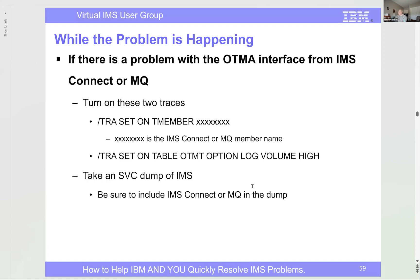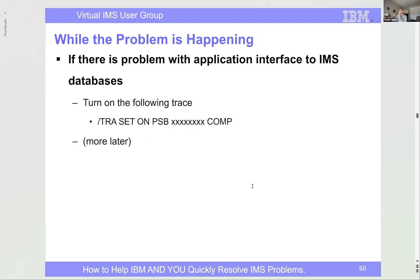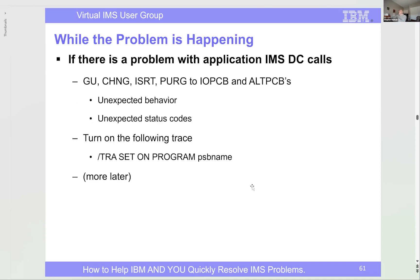If there are problems with the application talking to databases — getting bad status codes — turn on the PSB trace: TRACE SET ON PSB with the PSB name and keyword COMP. We'll talk more about that later. If there's a problem with IMSDC calls — unexpected status codes on IOPCB or PCBs — turn on TRACE SET ON PROGRAM with the PSB name. I'm trying to get you to do these things while the problem is happening without us having to tell you.